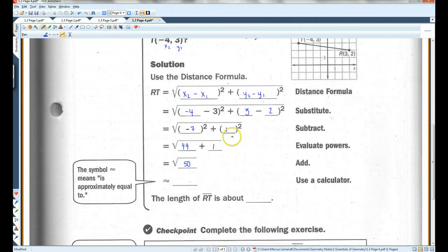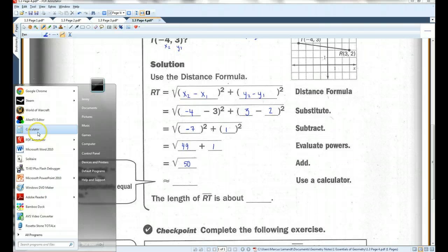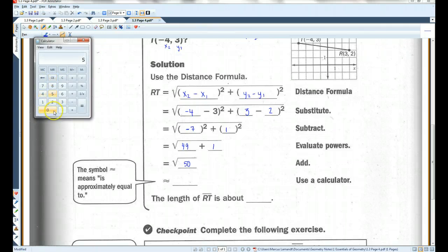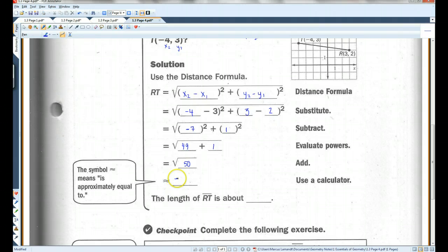Now generally speaking, you can just leave your answer like this, unless it says to round to a particular decimal point. So let me pull out a calculator. Square root of 50 is 7.07. I'm going to round to two decimal places. This little squiggly equal sign means approximately. So it's not exactly equal to this because I rounded, but it's about 7.07. So the length of segment RT is about 7.07.